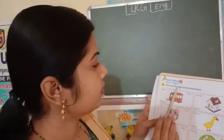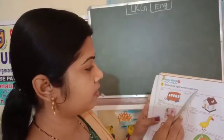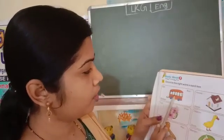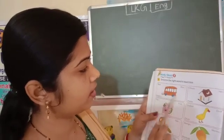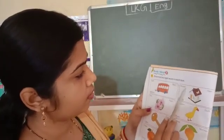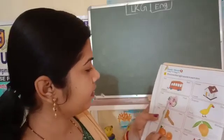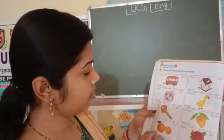Ye encircle the right word in each box. Ye picture kya hai? House. House me circle kya hai? House. House allen circle ok.